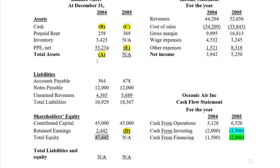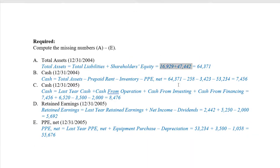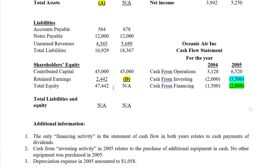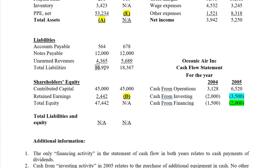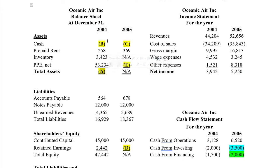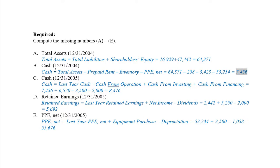Now that we have total assets, we take owner's equity plus liabilities to equal total assets. Once we have this, it's simple algebra to figure out B. We have total assets and subtract three numbers to get B: the 53,000, the 3,000, and the 258. We use the number we just solved and subtract out the 258, the 3,000, and the 53,000 — and that gives us the cash number.